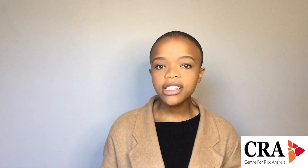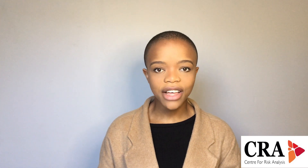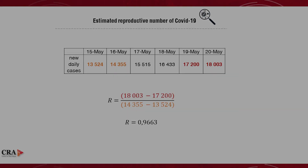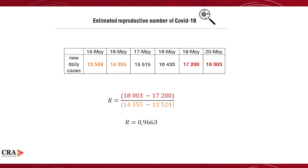To estimate the R for COVID-19 in South Africa, we applied the following equation. We apply this to confirmed cases during the lockdown period. Remember that a decline in infections is represented by an R-value of less than 1.